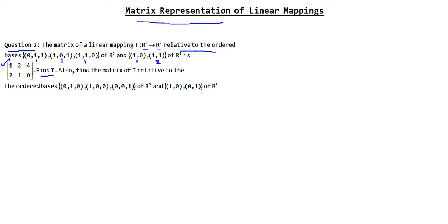What we have to do first is find the mapping T. The matrix of T relative to the given ordered basis of R3 and R2 is given as a 2 by 3 matrix: 1, 2, 4 and 2, 1, 0.